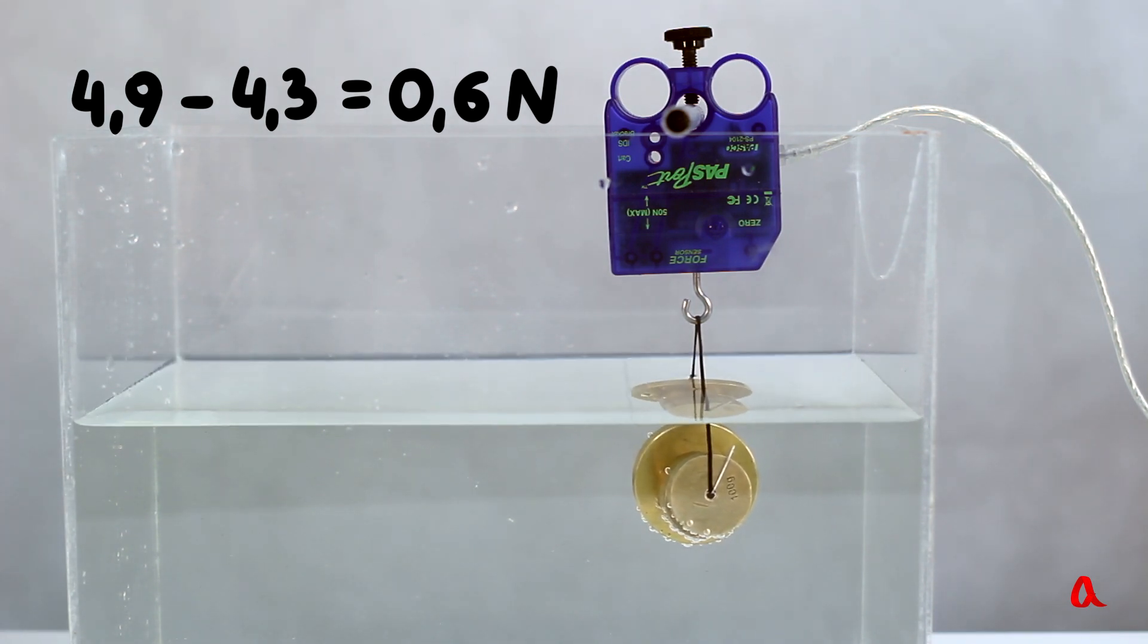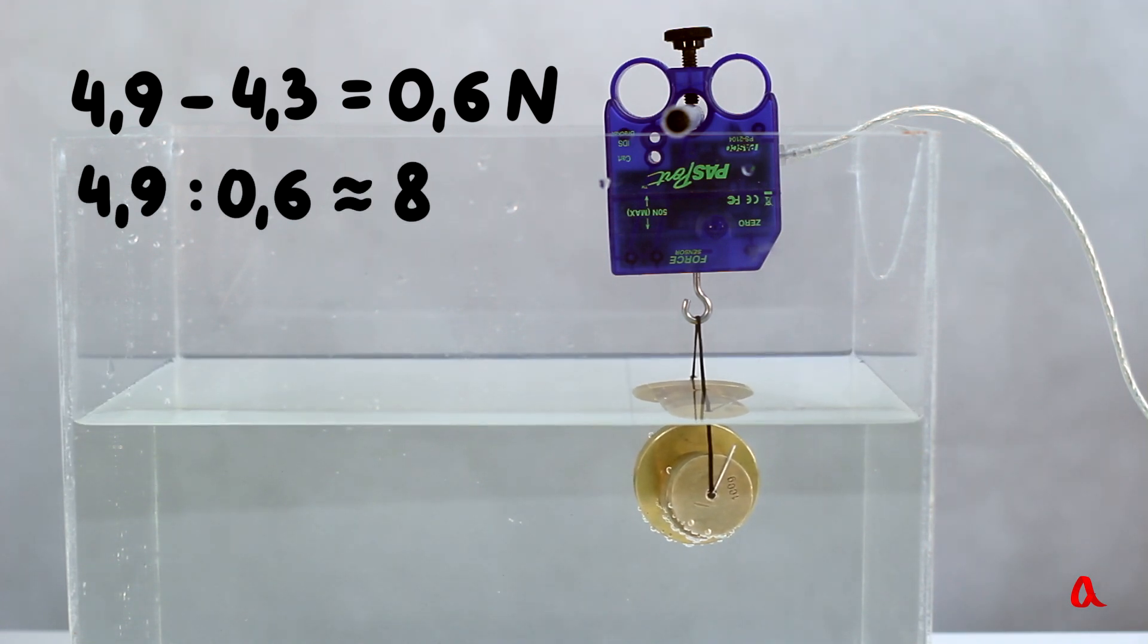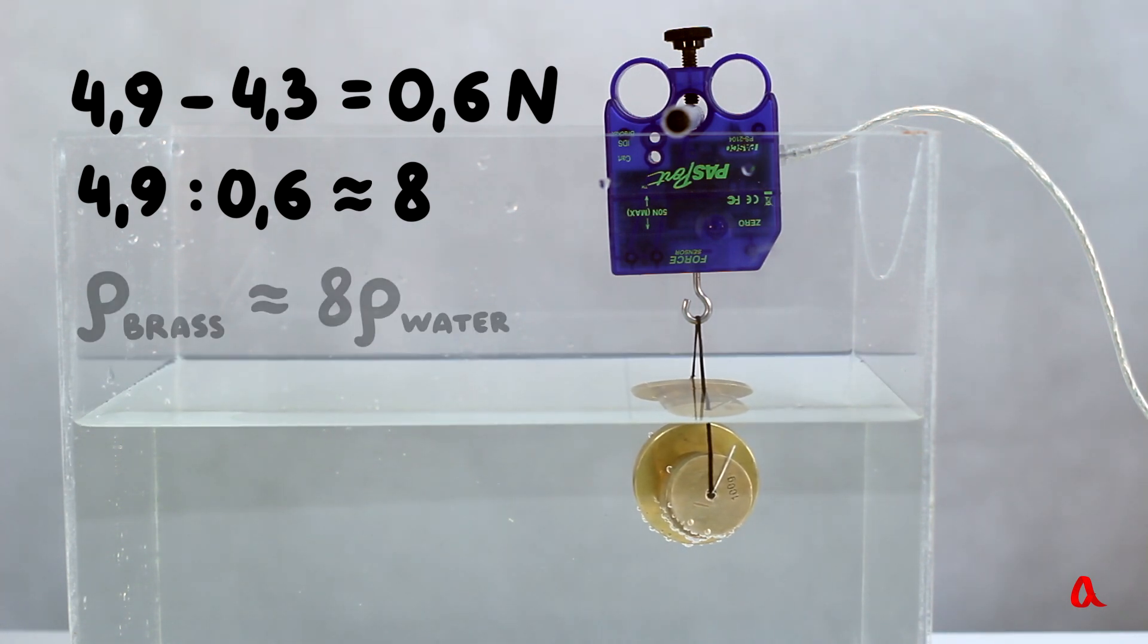The loads weight, which is 4.9N, is approximately 8 times greater than that of water, which is 0.6N, in the same volume. This means that the density of brass is approximately 8 times greater than that of water.